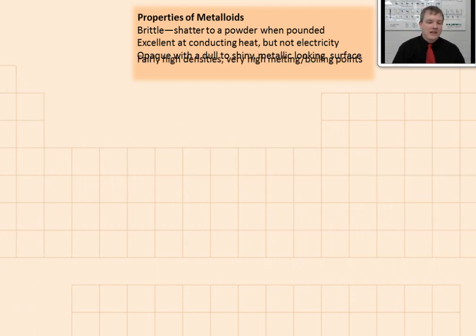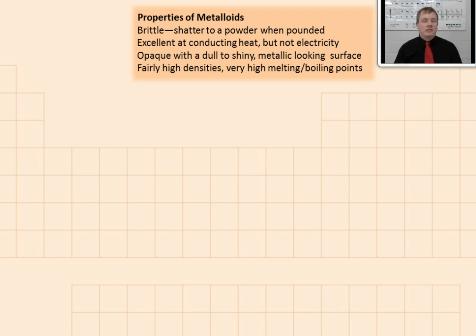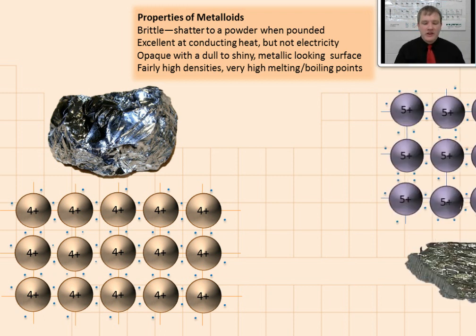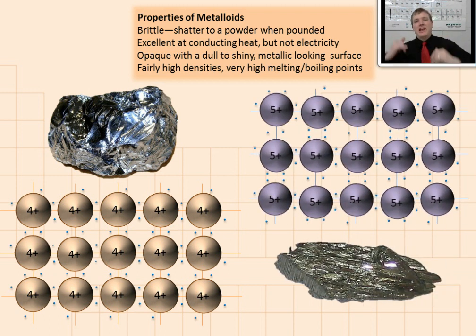And then finally, the last property of metalloids is that they have fairly high densities and very high melting and boiling points. And again, we can attribute that to the strength of the covalent network bonds between the atoms. Those atoms are held together by pairs of electrons that are tightly in place, holding the crystal arrangement tightly in place. So now you know the properties of metalloids and how metalloids are kind of like metals with their sea of electrons, sort of, but kind of like non-metals because of their covalent bonds.